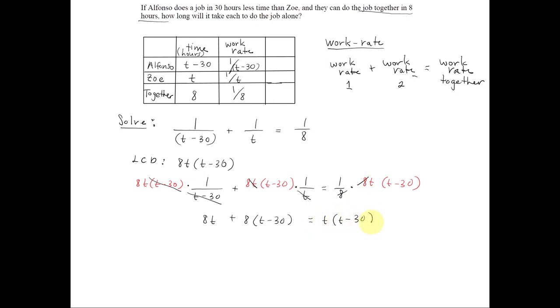Hence, we get an equation of one variable, clearing denominators. Let's go ahead and distribute, combine like terms, and solve. We get 8t plus 8t minus 240 equal to, distributing the t on the right side, t squared minus 30t. Right away, I notice the t squared on the right side, which tells me this is a quadratic equation.